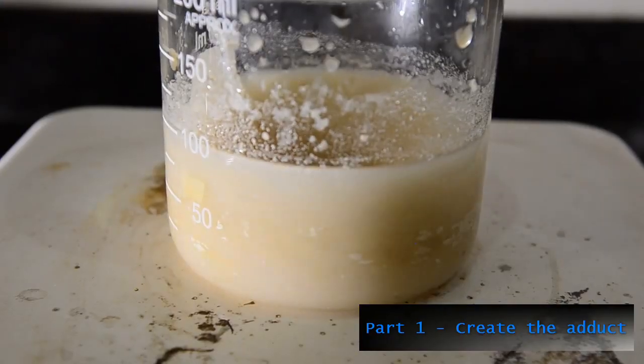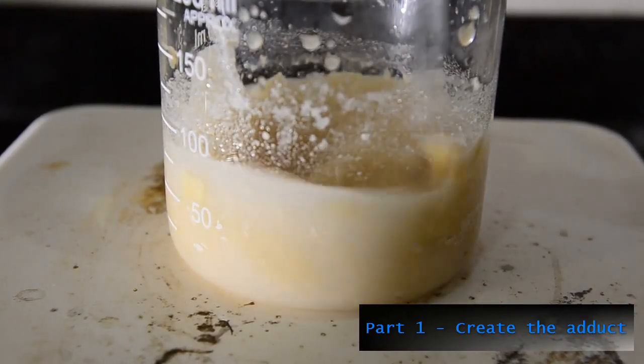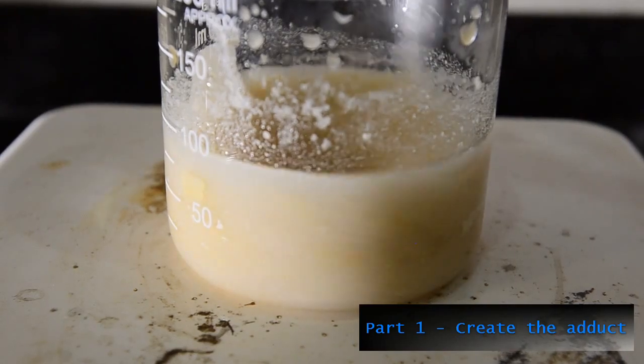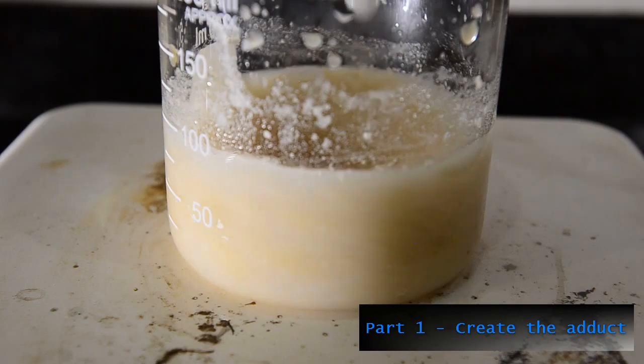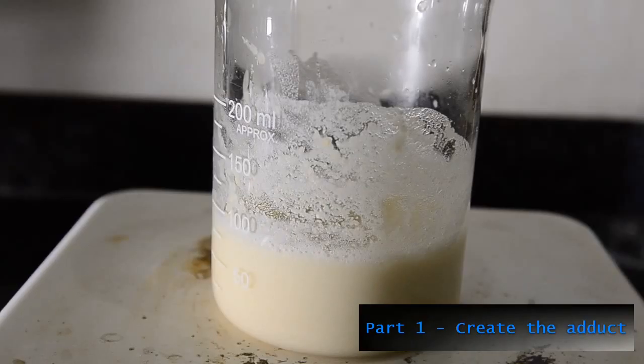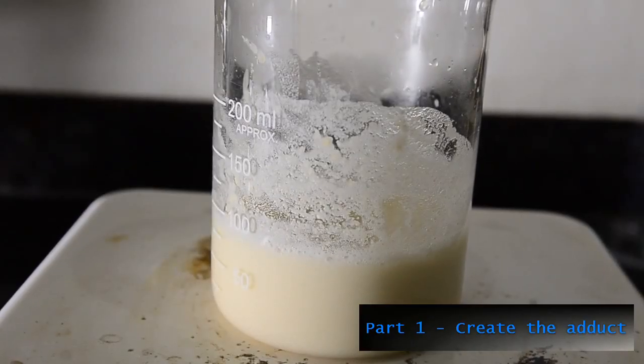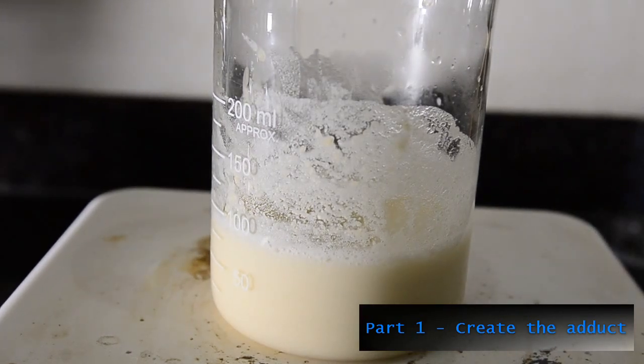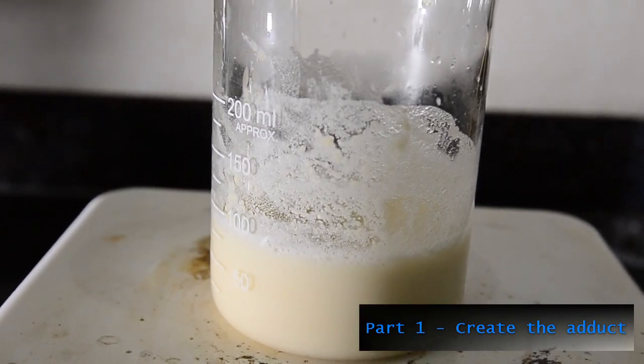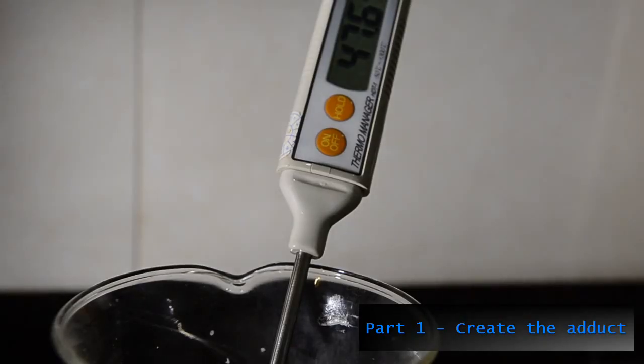Once formed it's very important to use a spatula to break up all the lumps in order to ensure all the benzaldehyde reacts. Spend some time doing this properly. Keep stirring for at least 15 minutes and breaking up the lumps and you should end up with a very fine precipitate like this. Once completed you'll notice a quite significant temperature increase.